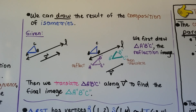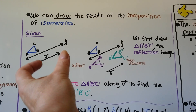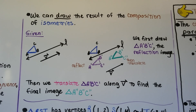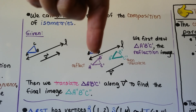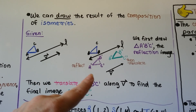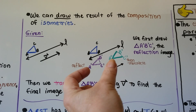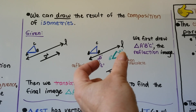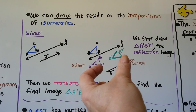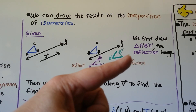We can draw the result of the composition of isometries. Given triangle ABC and line l, with vector v of a certain length, the first thing we do is draw the purple a prime b prime c prime as the reflection image across l. Then we translate it the distance of vector v — a prime to a double prime, b prime to b double prime, and c prime to c double prime. So we had a reflection, then a translation.